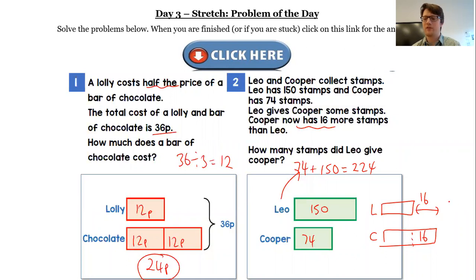He has 16 more stamps than Leo. We know though that it still adds up to 224 stamps in total. There aren't any new stamps, they've just swapped between the two children.